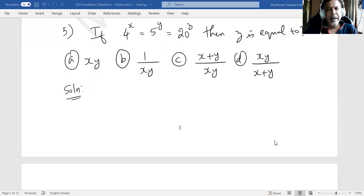Let us find the correct answer for this problem. If 4 power x equals 5 power y equals 20 power z, then what is z's value? It should be one of these choices. Let's proceed.